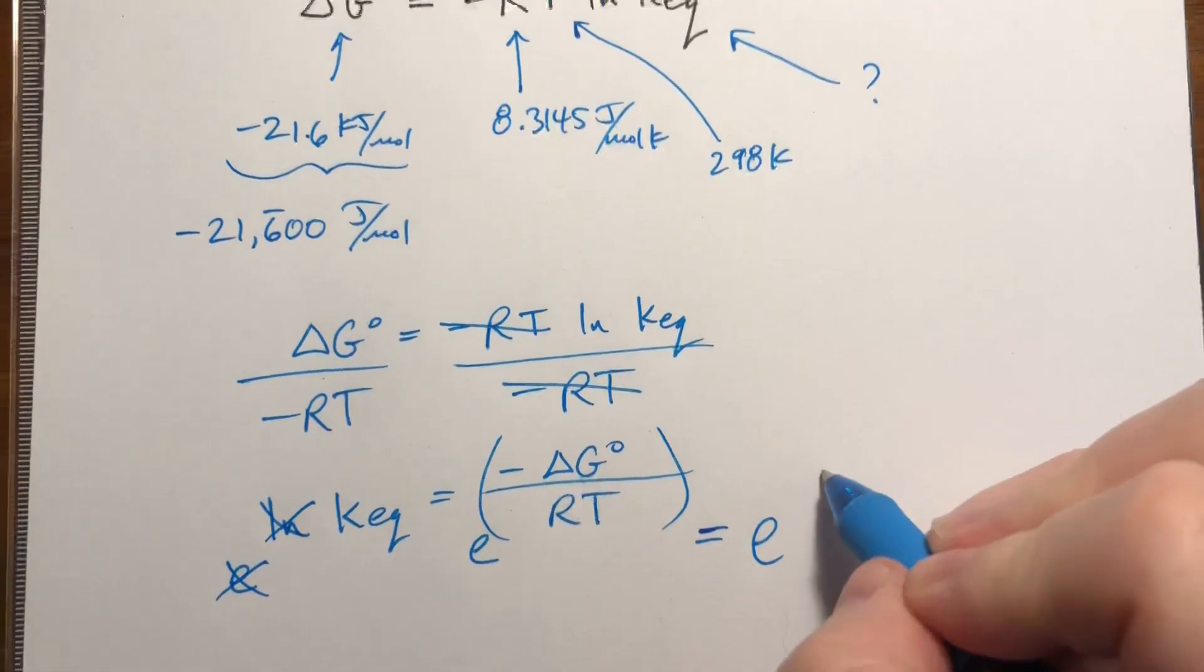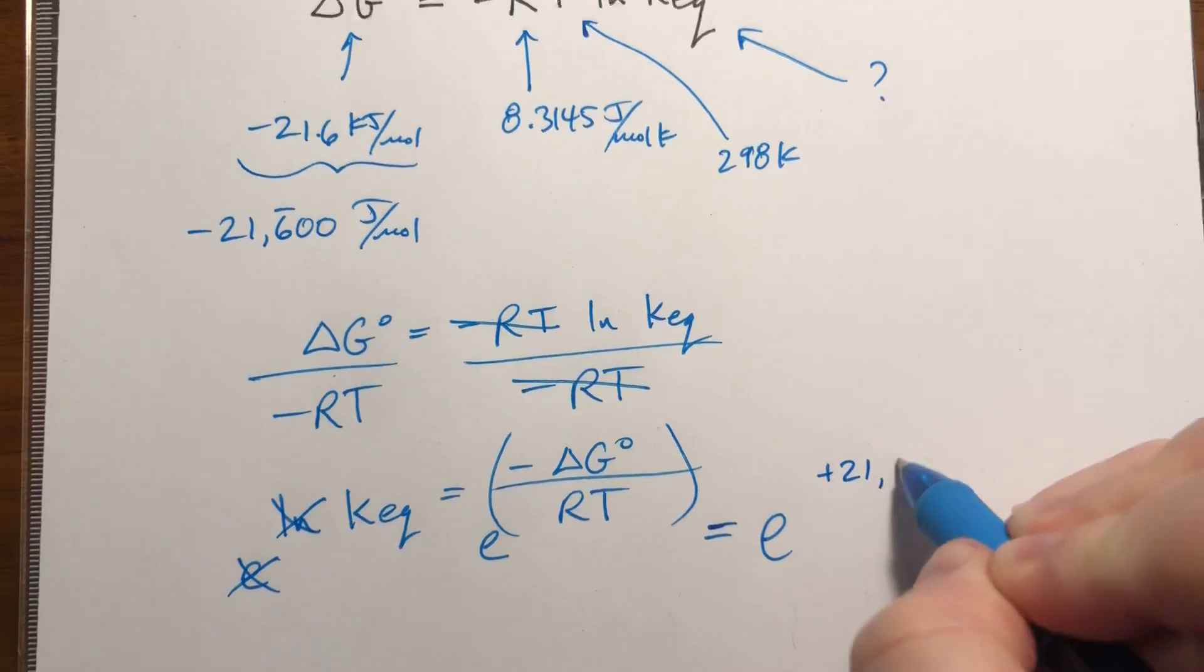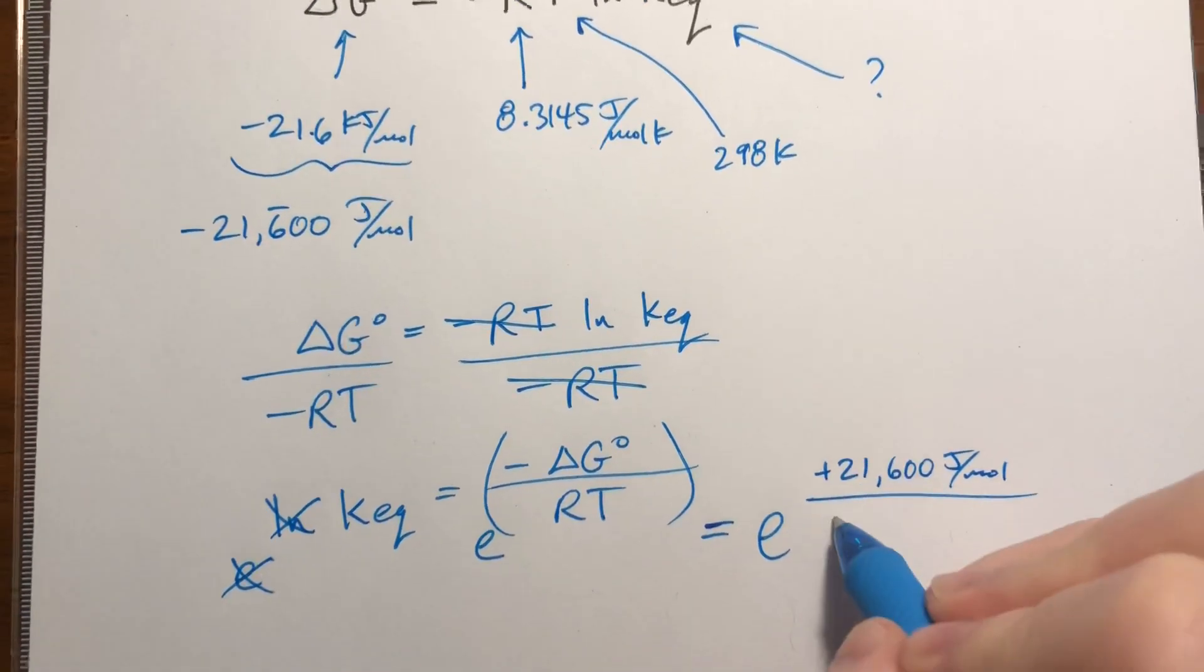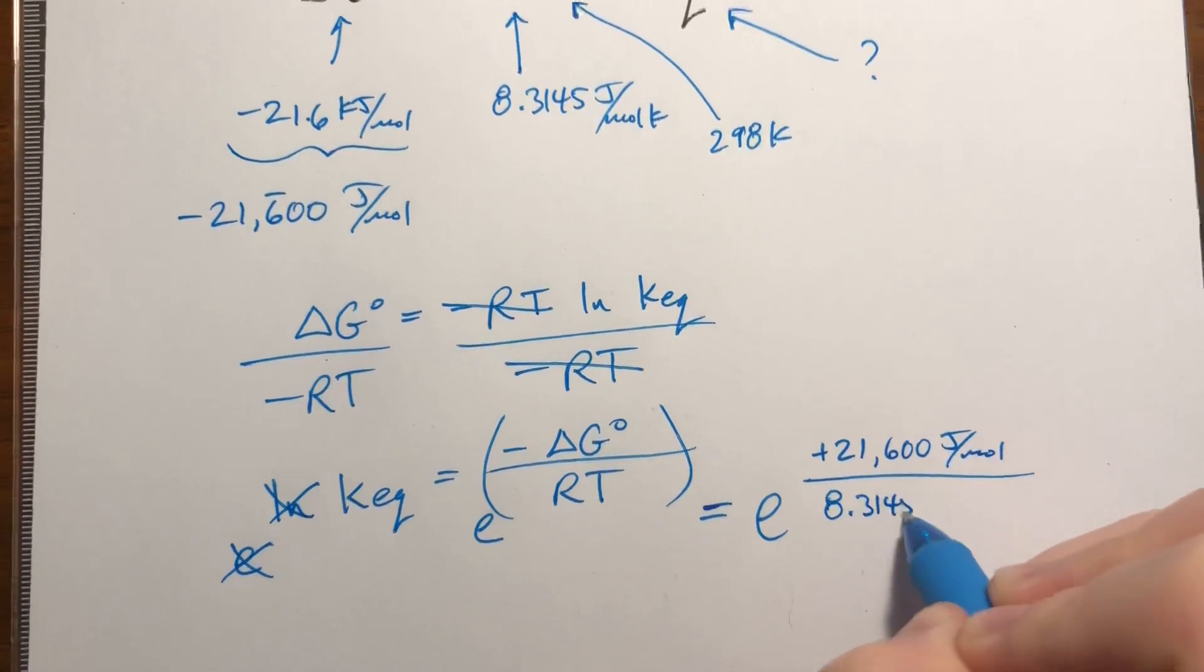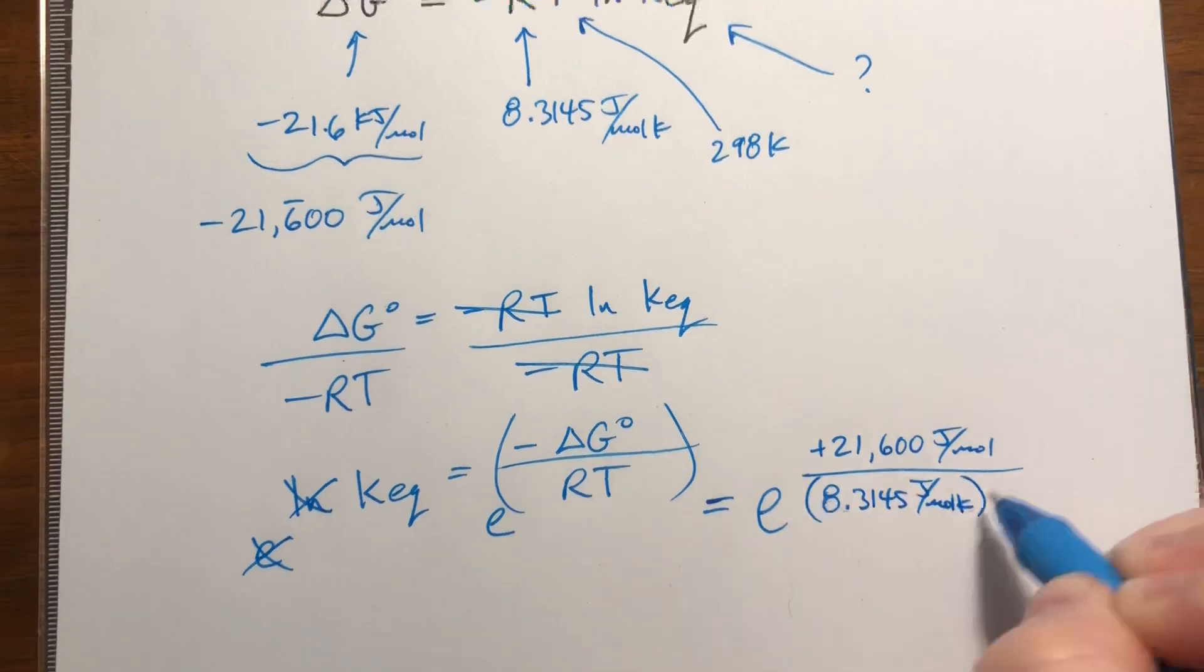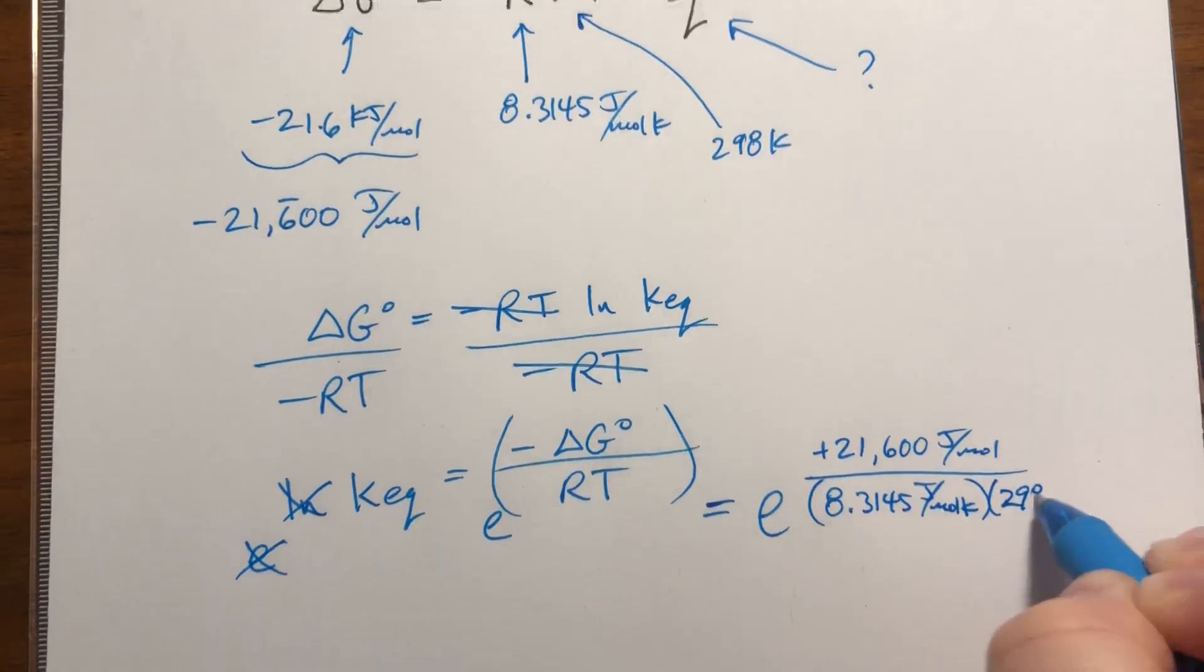so it's going to be positive 21,600 joules per mole, divided by 8.3145 joules per mole Kelvin, and then that's times 298 Kelvin.